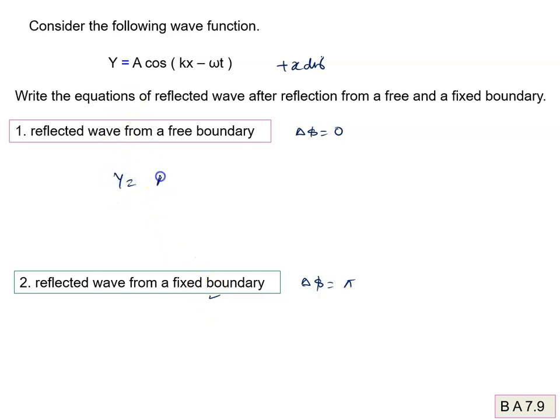For the free boundary, Y2 = A cos(-kx - ωt). We know that cos(-θ) = cos(θ), so we can write Y2 = A cos(kx + ωt). This is the answer to the first part.